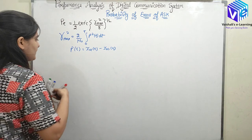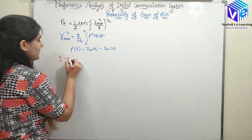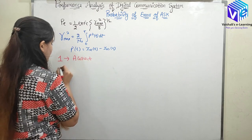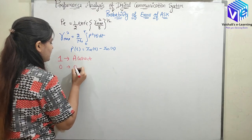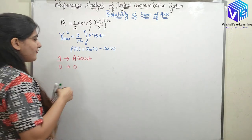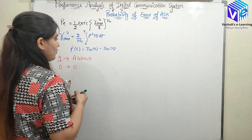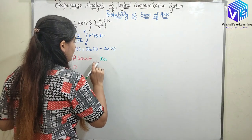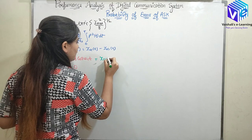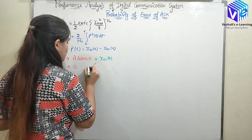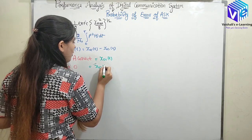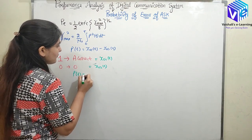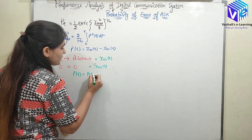Now we are talking about ASK. In ASK, 1 is represented by A·cos(ωc·t) and 0 is represented by 0. So x₀₁(t) = A·cos(ωc·t) and x₀₂(t) = 0.